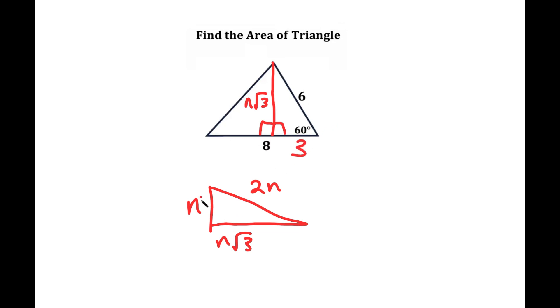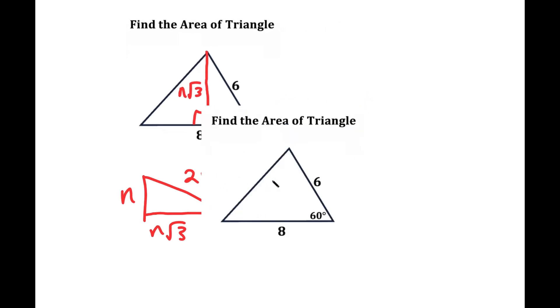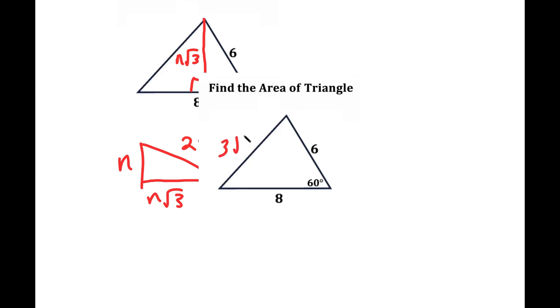And now that we know that n is 3, we know that this side is going to be n times the square root of 3, which is going to be 3 root 3. So this turns into 3 root 3.